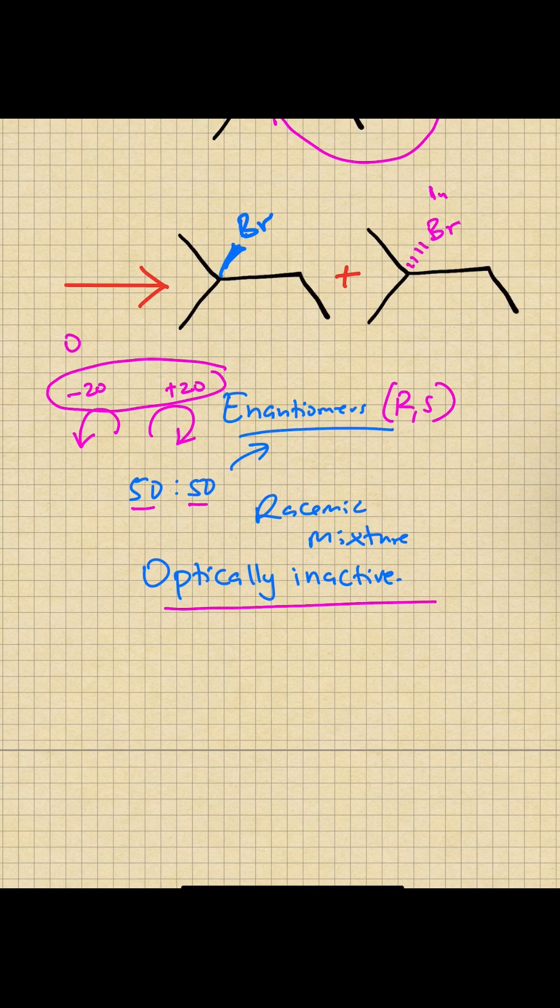So this kind of mixture where you have a 50-50 mixture of enantiomers is called a racemic mixture and it's optically inactive.